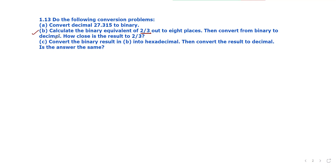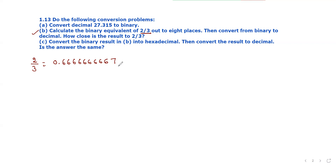Then we will compare the 2/3 equivalent value. Since the integer part of 2/3 is 0, binary integer part is also 0 — decimal 0 maps to binary 0. Only the fractional part needs to be converted to binary.